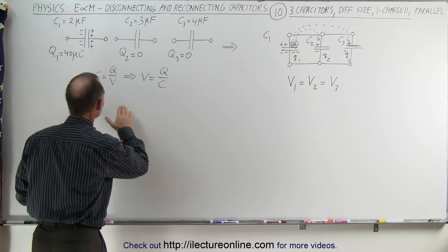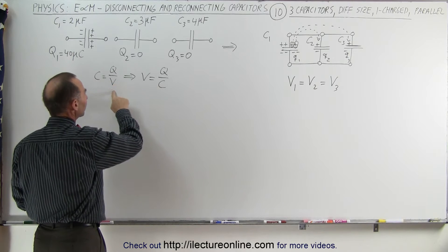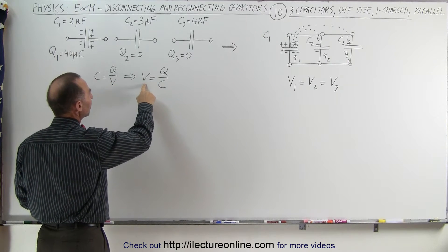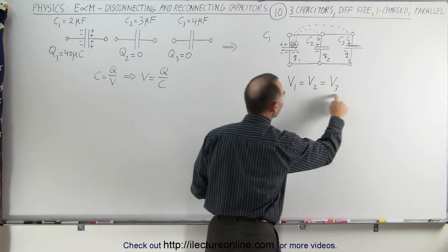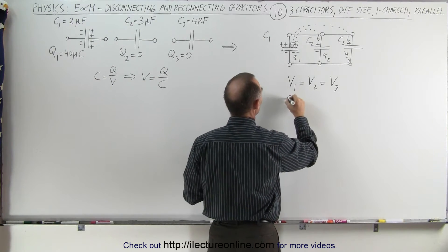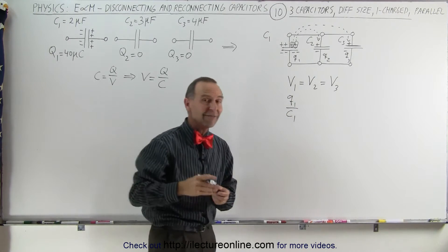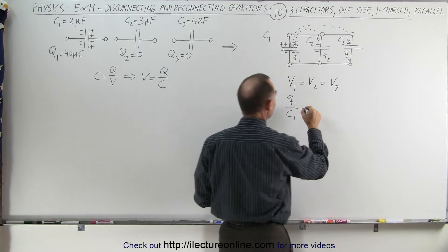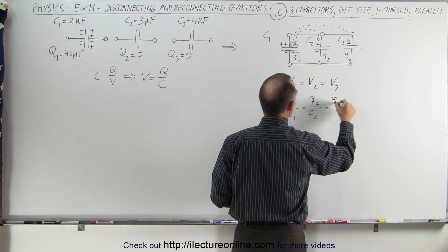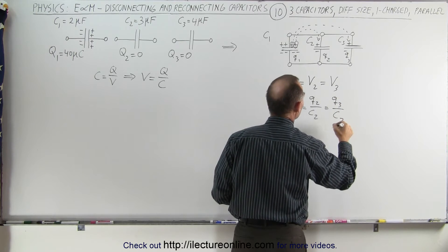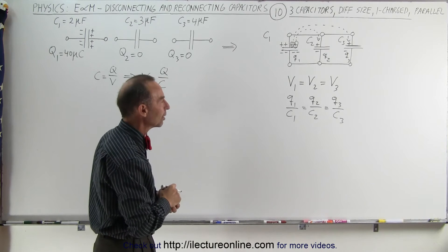Using the definition of capacitance which is charge divided by the voltage we can solve this for the voltage, that means it's equal to the ratio of the charge divided by the capacitance. Which means we can replace this by q1 over c1, small q1 being the final charge on c1, which is equal to q2 over c2, which is equal to q3 over c3. Again, small q's representing the final charge on each of the three capacitors.